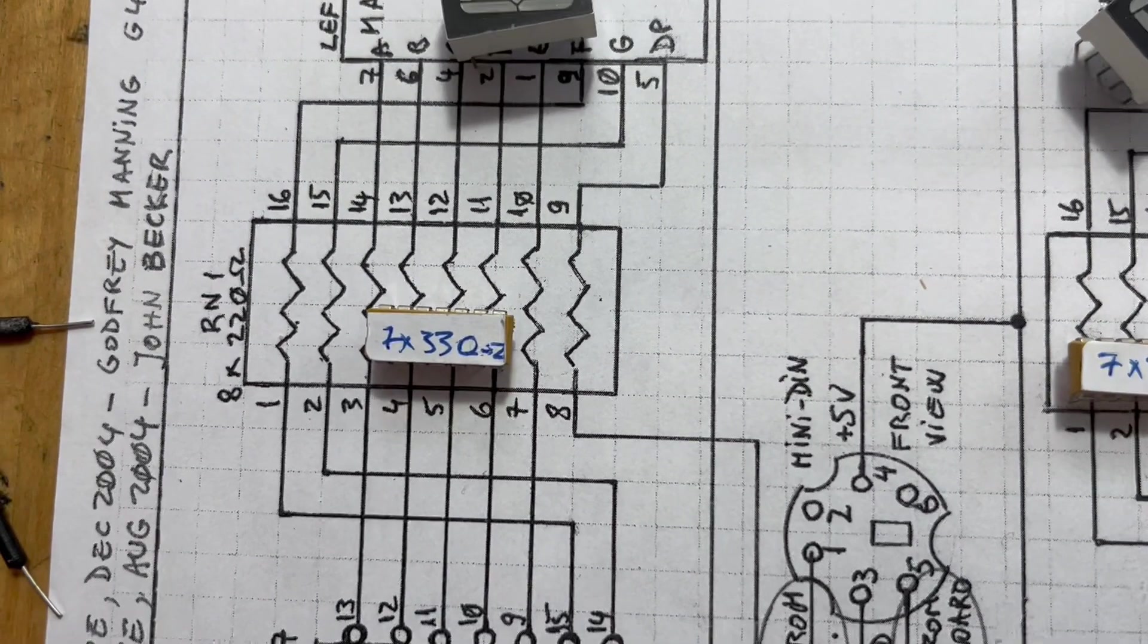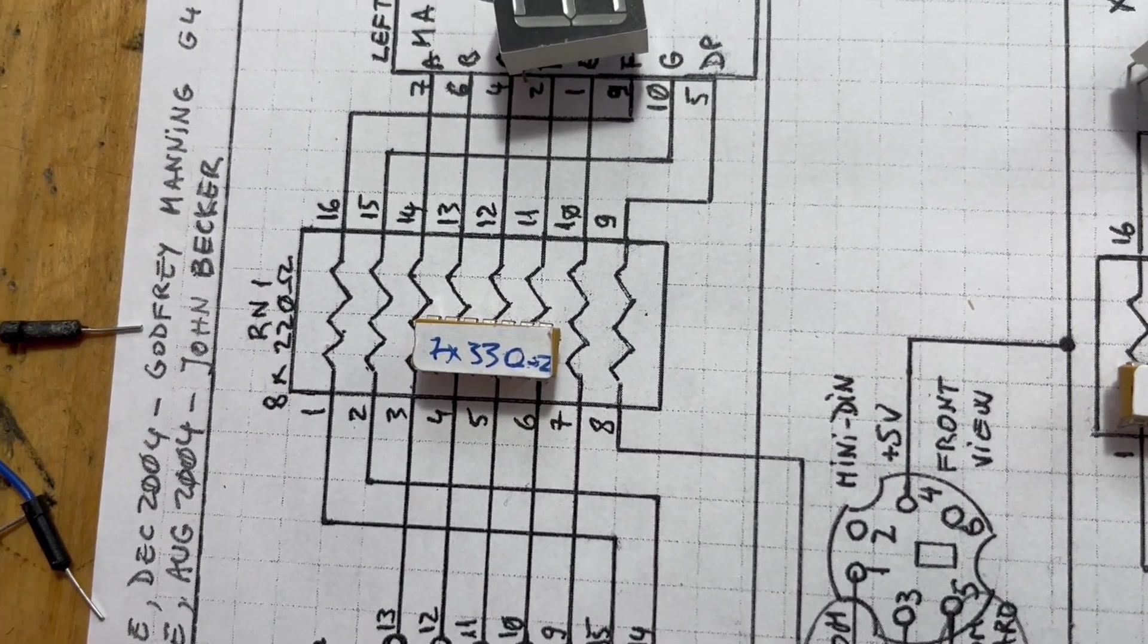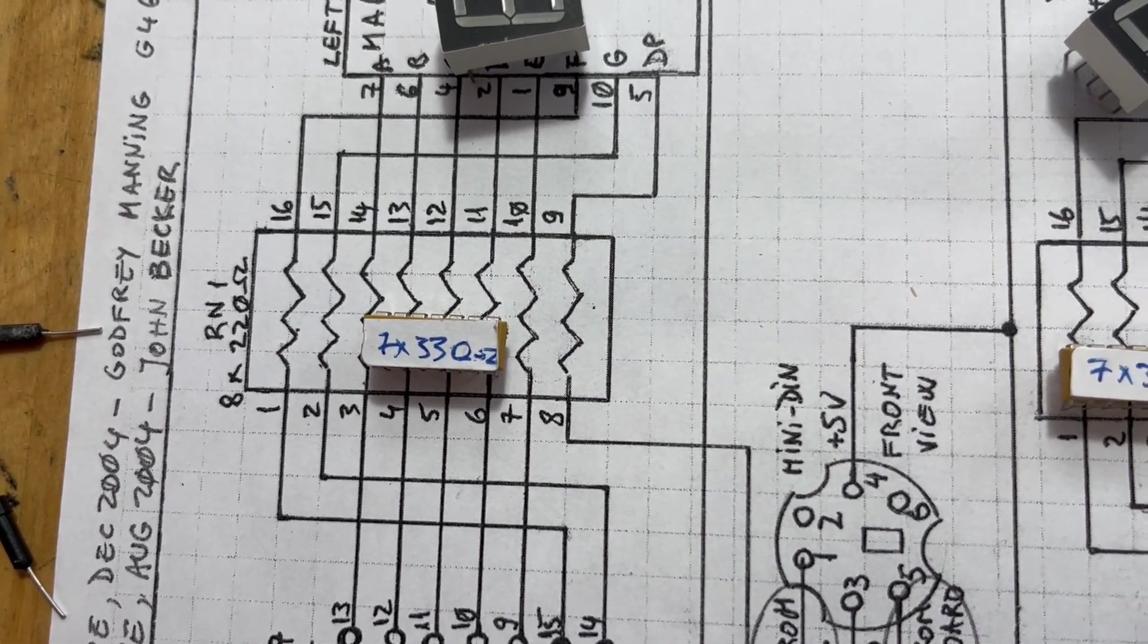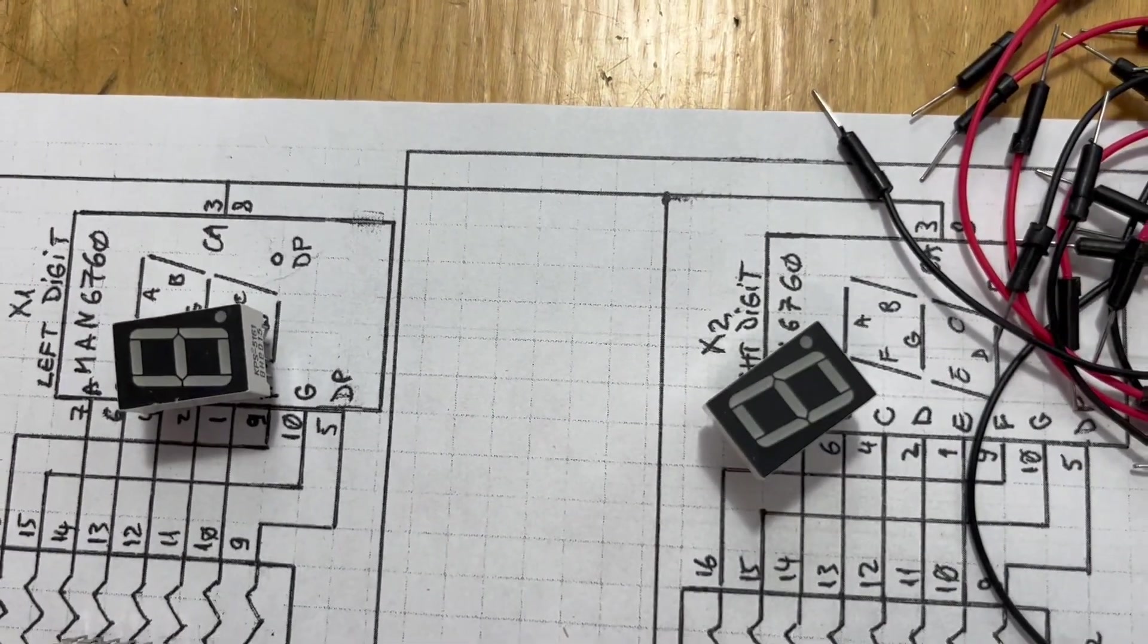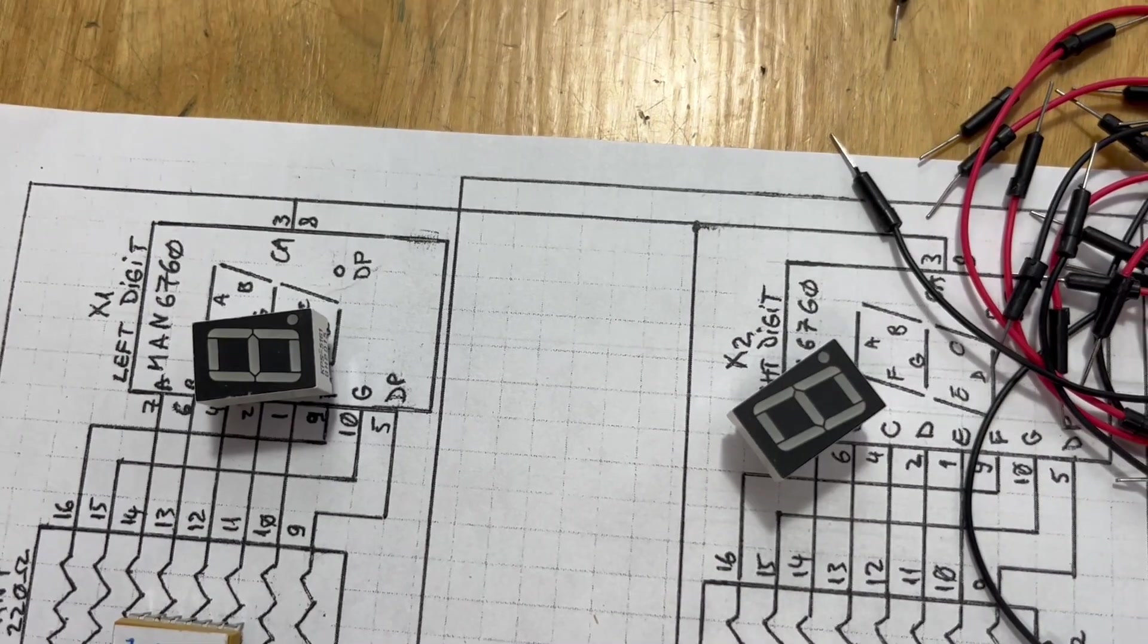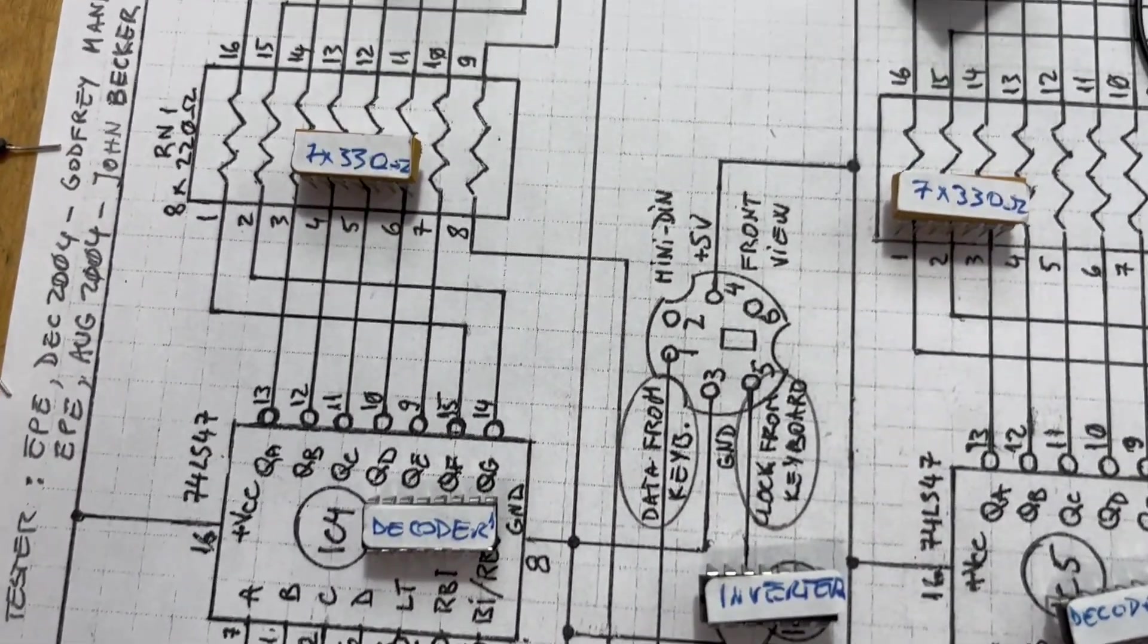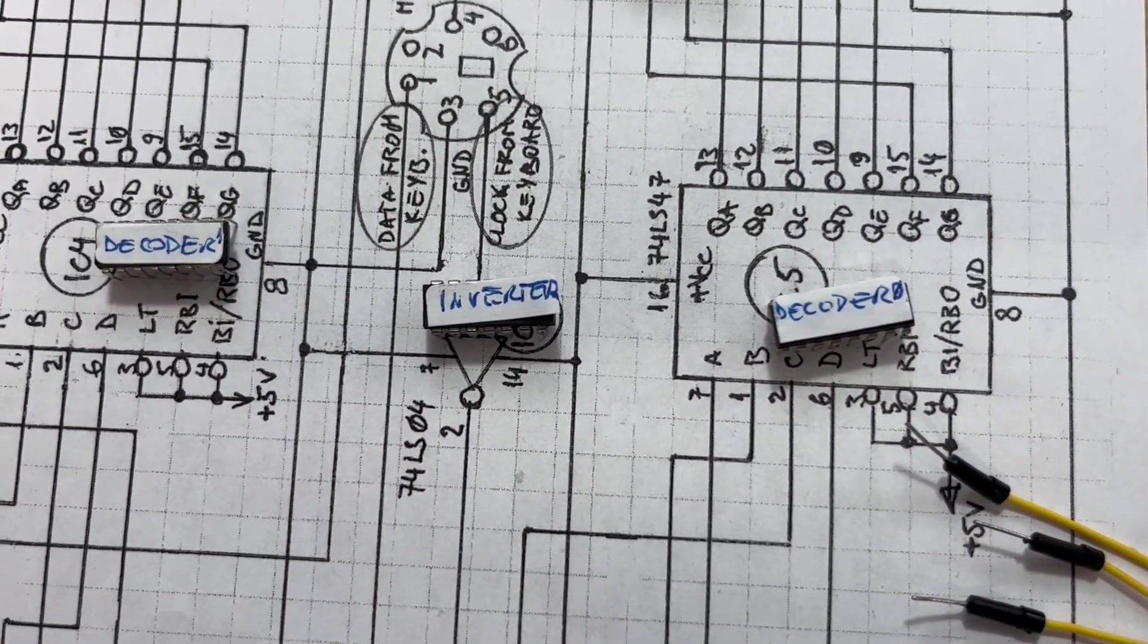If you don't have network resistors like this one, it doesn't matter. You can place seven resistors, any value between approximately 200 to 400 ohms. There are two of them, of course, for the two-digit seven-segment displays. These are common anode.